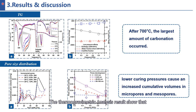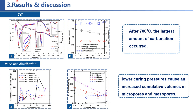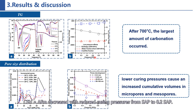The thermogravimetric results show that samples cured at standard pressure ended up with the highest weight loss at 700 degrees centigrade, which indicates the largest amount of carbonation occurred. Besides, both the mass fraction of calcium hydroxide and combined water of calcium silicate hydrate and monosulfate hydrate calcium sulfoaluminate decreased with reduced curing pressures from standard pressure to 0.2 pressure.